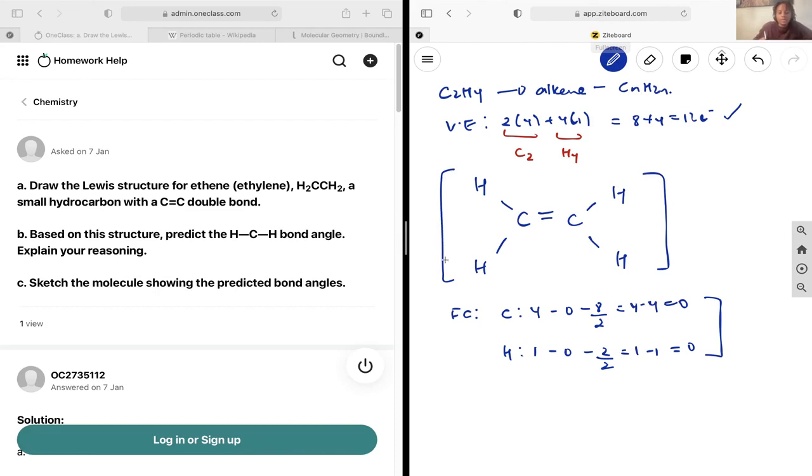Now based on this structure, we want to predict the H-C-H bond angle. Let's figure out the molecular geometry for this molecule. This carbon here...